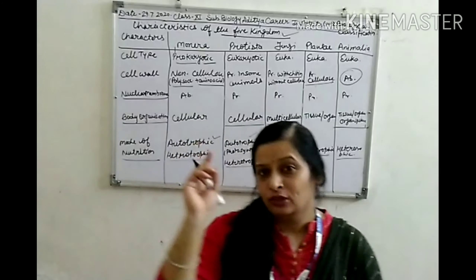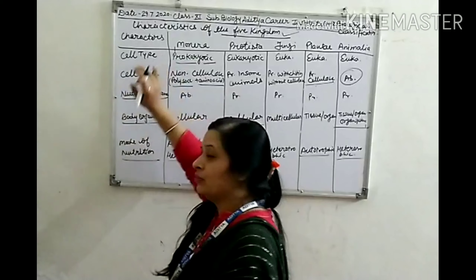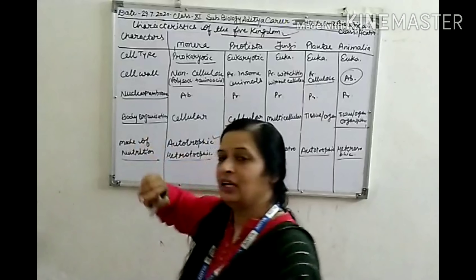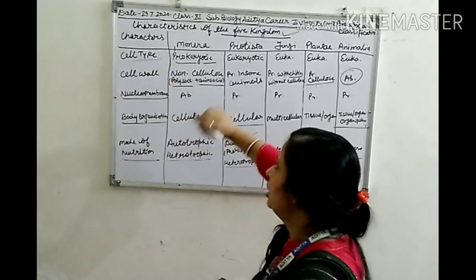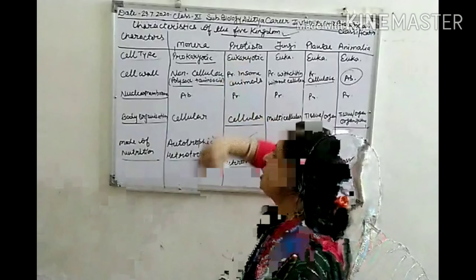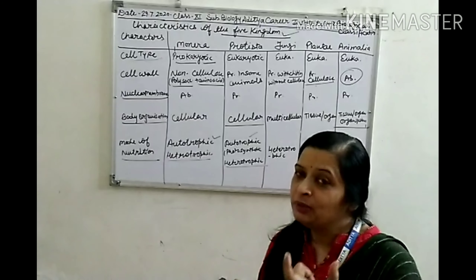The characters we will study are cell type, cell wall, and nuclear membrane. In Monera, prokaryotic cells are present — it means nucleus and nuclear membrane are not present, and cell organelles are not present. In Protista, Fungi, Plantae, and Animalia, eukaryotic cells are present. Eukaryotic kingdoms have well-developed nucleus and well-developed organelles.